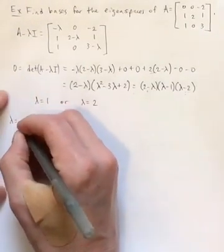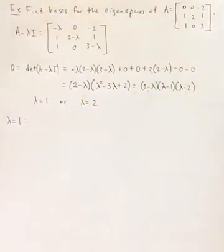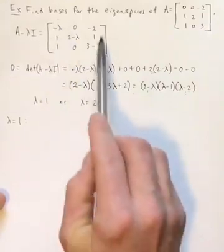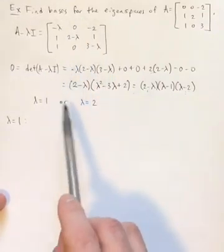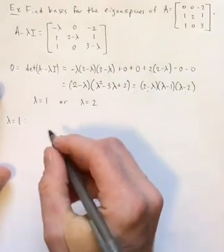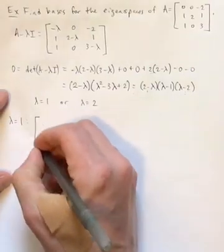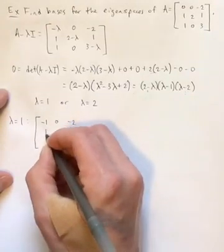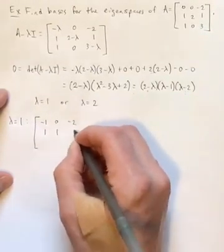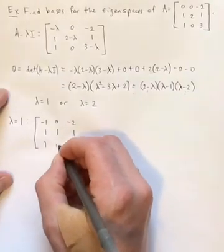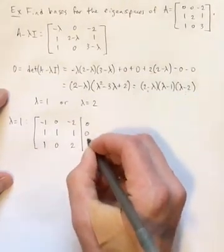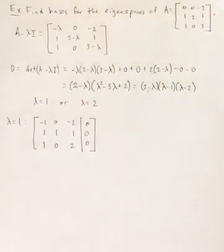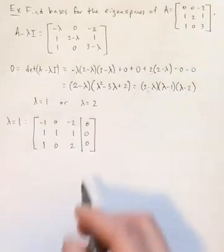So let's go ahead and find those. I'm going to start with lambda equals 1. And just like in the last video, I'm going to go ahead and find this matrix with 1 put in place. So that's going to be negative 1, 0, negative 2, 1, 1, 1, and 1, 0, 2. And this is a homogeneous problem, so I'm going to have zeros augmented on there.